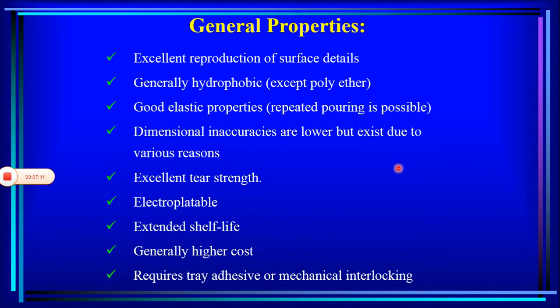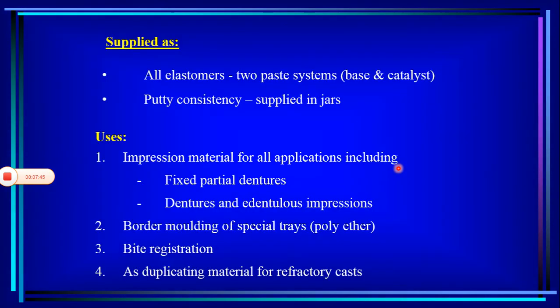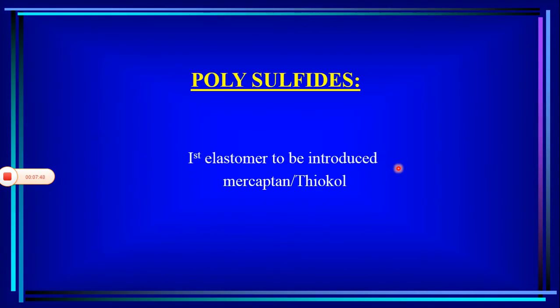These are the general properties of elastomeric impression materials. They have excellent reproduction of surface details. Generally they are hydrophobic and have good elastic properties. Though they have many positive aspects, there are a few drawbacks, which will be discussed when we start with individual materials. Let us start with the first one: polysulfides.